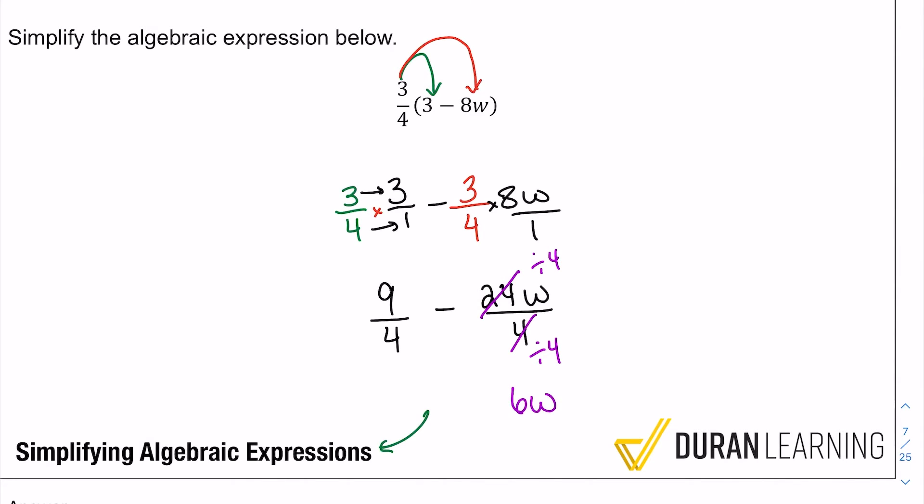And I'm not going to show the divided by one because at this point it's redundant. We know that any number is that number divided by one. So my final answer can be nine quarters minus six w. That's one way to have it.